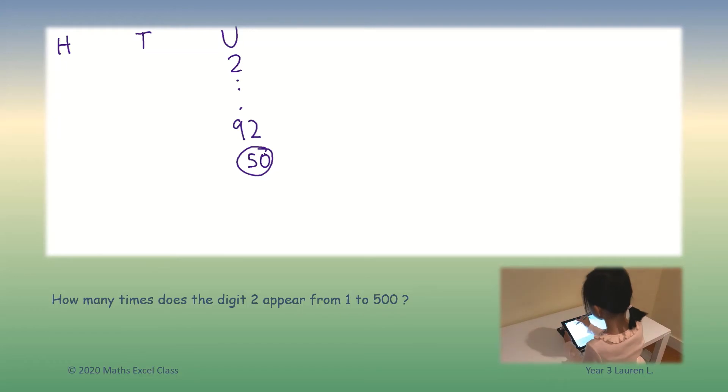For the tens, from 20 to 29, there are 10 numbers. But remember again, that applies to all the hundreds. So there are 50 numbers.